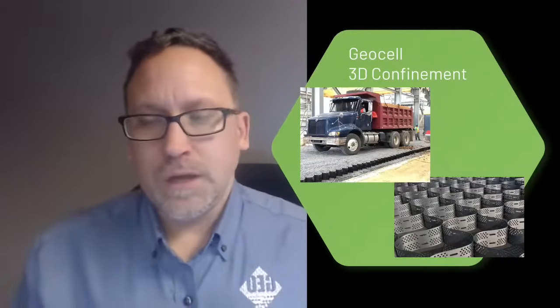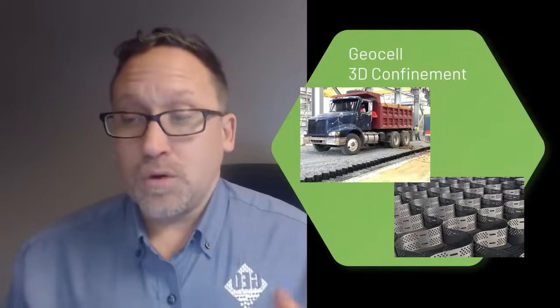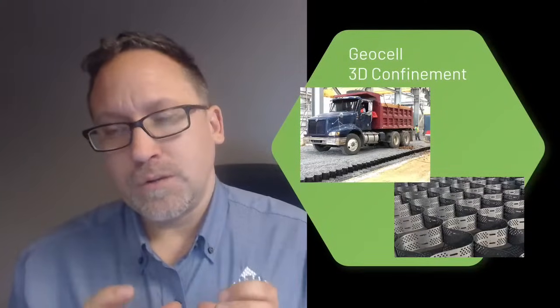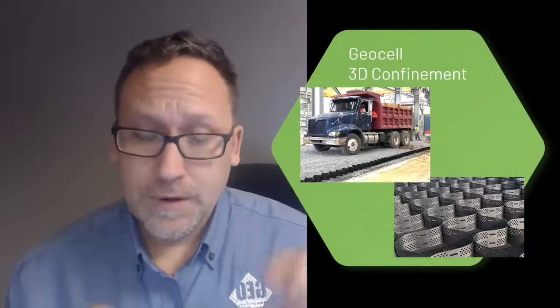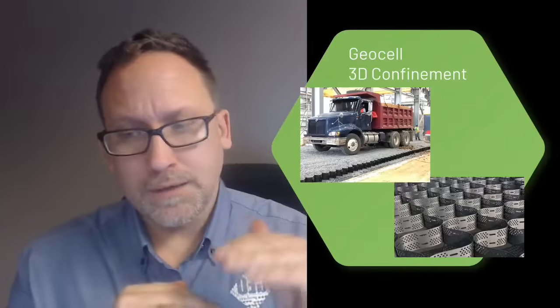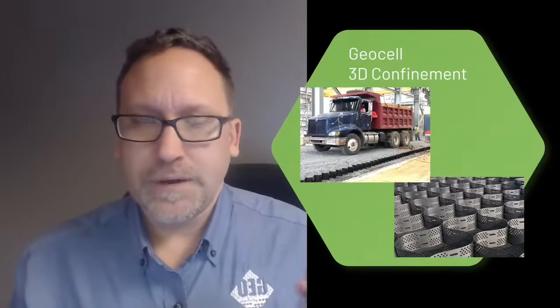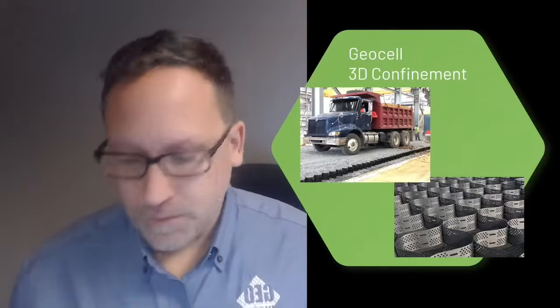So you're getting multiple different forces to hold it up. Not only do you have the hoop strength holding up, you have the passive forces of all the other cells around it holding it up which really reduces the rutting that you see when you're using geocell. And you're able to use pretty much any material in it. Whereas on the geogrid you have to have some kind of material that's going to lock into that plane. So you're going to have to use some kind of bigger rock. You can't really use sand in it. Whereas in geocell you can use sand and still get a really good performance out of it.